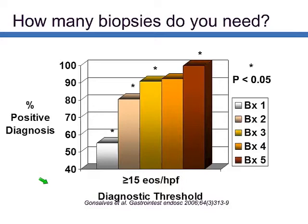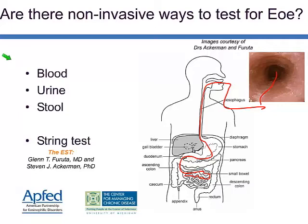People often ask how many biopsies we take. We did a study in 2006 and found the disease is very patchy — with only one biopsy we'd see the disease in just 55% of cases, whereas increasing to 2, 3, 4, or 5 biopsies gives 100% sensitivity. Based on this, it is now routine to take multiple biopsies along the length of the esophagus to more accurately diagnose this condition.